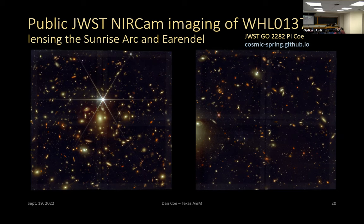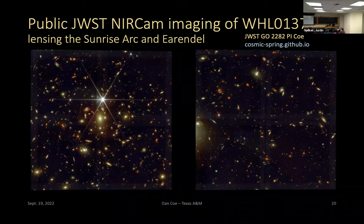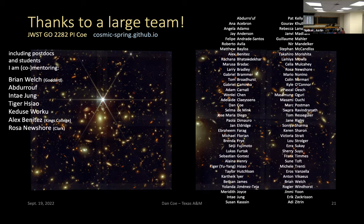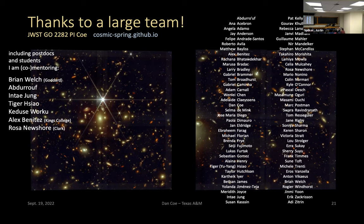Here's my JWST program observing this galaxy cluster. NIRCam actually has two cameras, so we get a relatively blank field on one side for free, plus the galaxy cluster lensing distant galaxies. I made all the data public — available at cosmicspring.github.io. We also have a Cosmic Spring Twitter. I have a large team; I've recruited now about 75 people. I'm mentoring a number of students and postdocs, including Brian Welch, my grad student at Johns Hopkins, who made the discoveries I'm about to show. He's now graduated and at NASA Goddard.